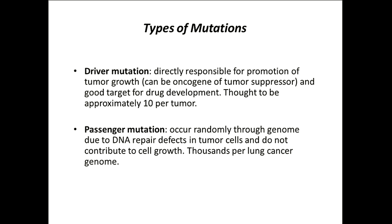In the era of NGS and high-throughput sequencing, we now layer two other types of mutations onto those: drivers and passengers. It's important not to get confused that oncogenes doesn't mean driver. A driver can be an oncogene or a tumor suppressor — it just means it's an important mutation that drives the growth of that tumor.